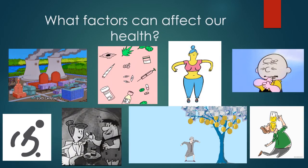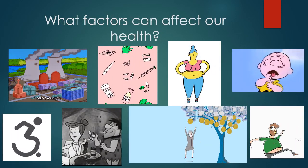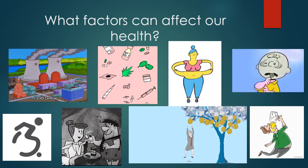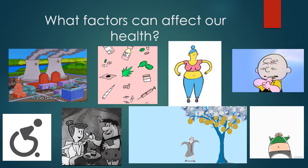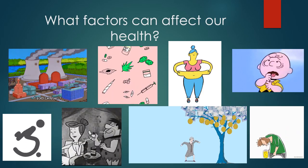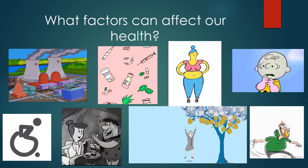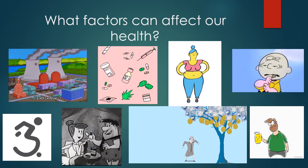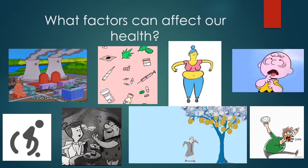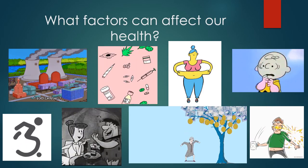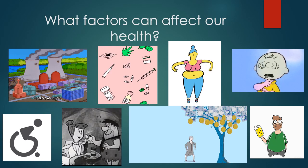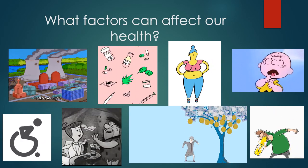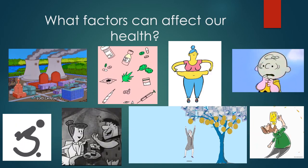We're moving on to question number two in the workbook, and we need to be thinking about what factors can affect our health. We've talked about Maslow's hierarchy of needs and what we need to feel accomplished and happy. We've looked at our individual needs, and now we need to look at factors that can affect our health — what can get in the way of us meeting these needs.